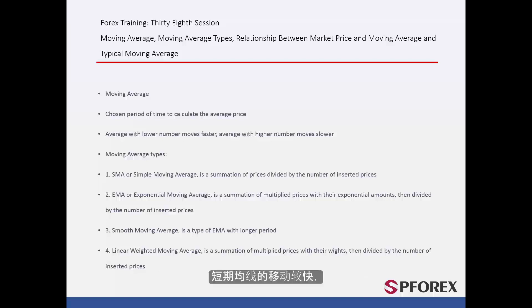A Moving Average determined with a lower number of timeframes would have faster movement, while more timeframes would slow down MA displacement since there is more data calculated in the average.